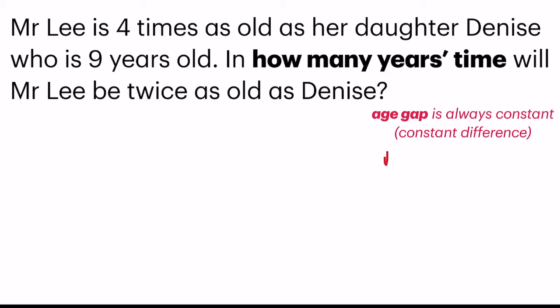For example, Mr. Lee is 30 years old, and Dennis is 5. They have an age gap difference of 25. This age gap difference, or 25, is always the same every year.